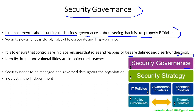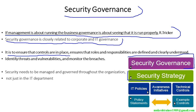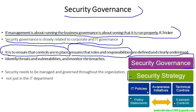The first one here is security governance, and the second thing is a security strategy. Security governance is closely related to corporate and IT governance. It ensures that controls are in place — that is important number one. Number two, ensure the roles and responsibilities are defined and clearly understood.